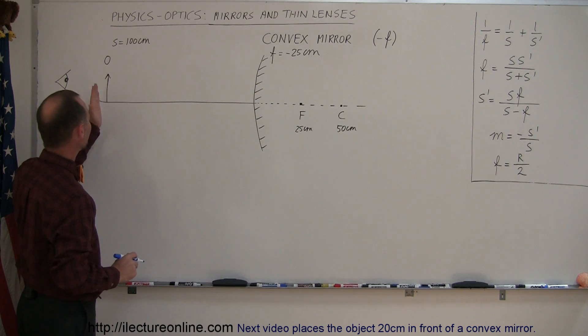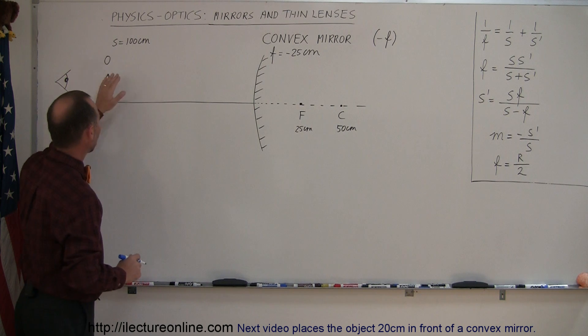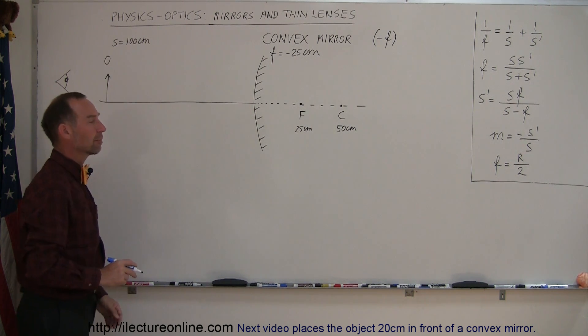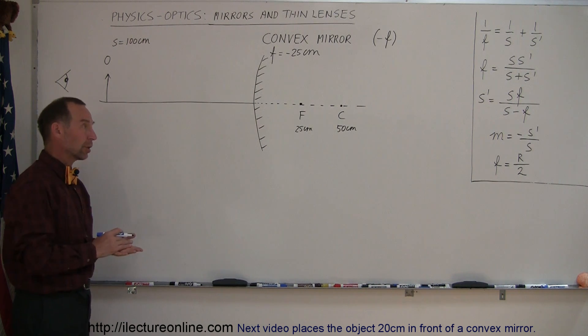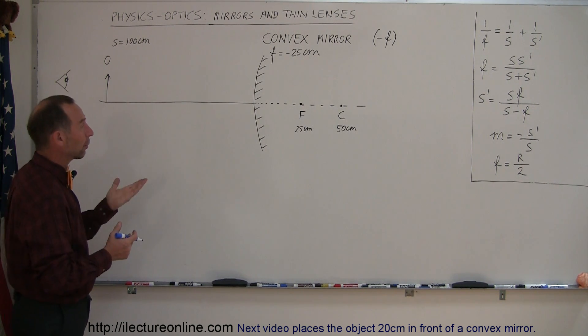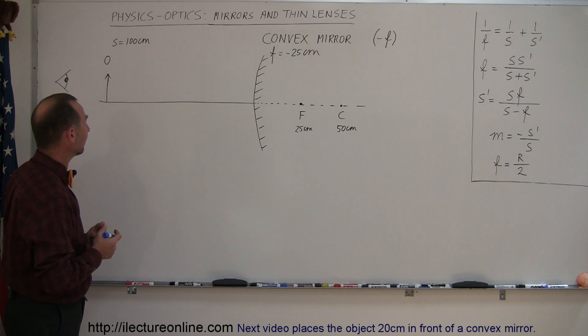So we now have placed an object quite far away from the mirror, at a distance of 100 centimeters in front of the mirror. Where will the image be? Will it be virtual? Will it be real? What's the magnification? And will it be upright or inverted? Let's find out.